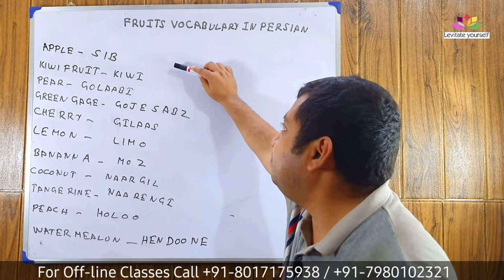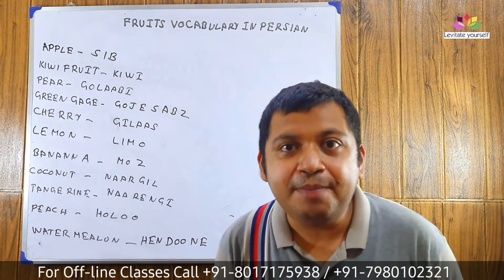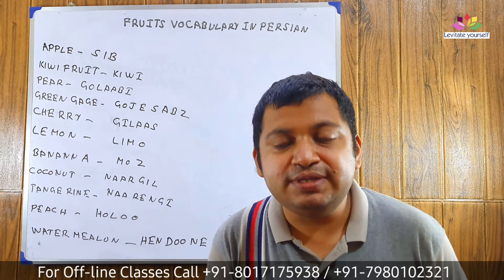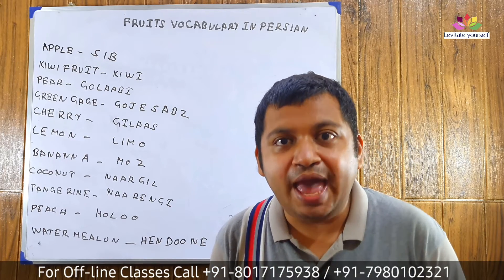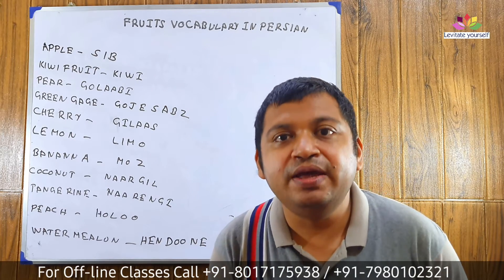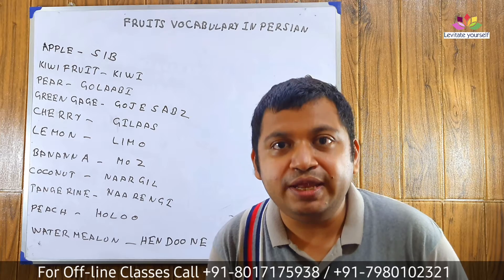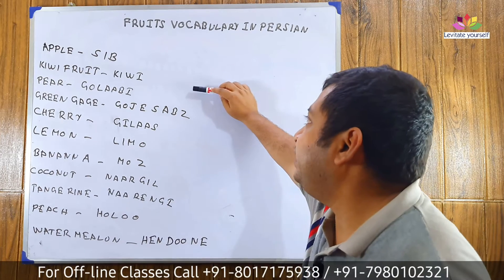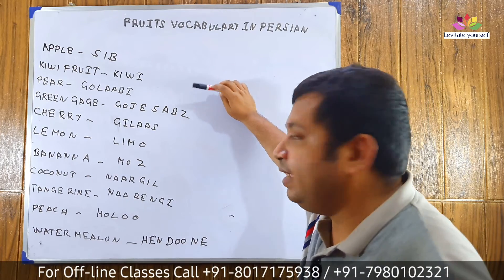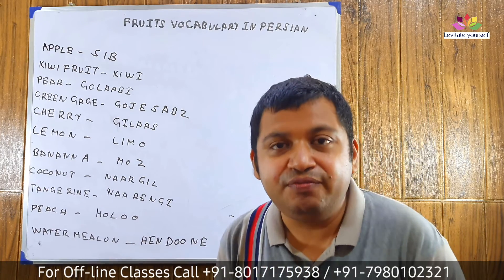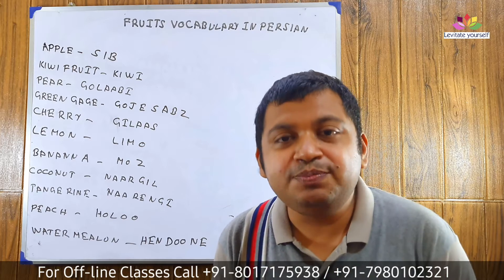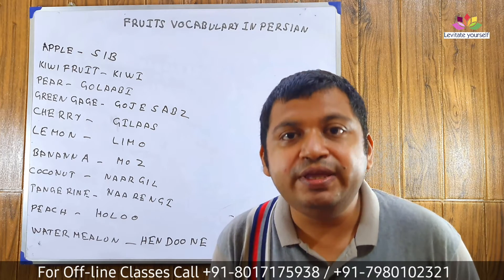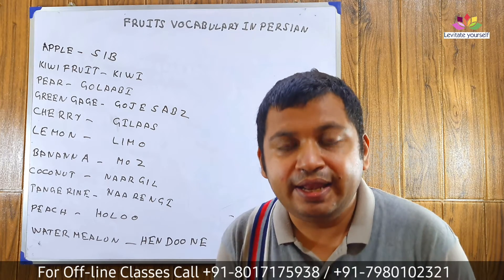Apple: Seeb. Let's pronounce it with me: Seeb. Come to the next word. Kiwi fruit: Kiwi. Let's pronounce it with me: Kiwi.